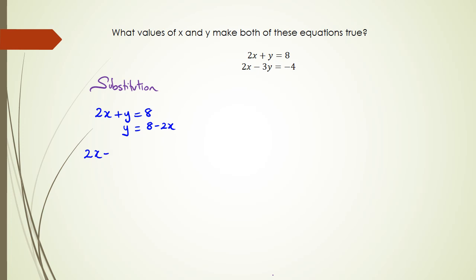Once you have this, you substitute y into the second equation. The second equation is 2x minus 3y equals negative 4, but we know that y equals 8 minus 2x. So we can write this as 2x minus 3 multiplied by 8 minus 2x equals negative 4.